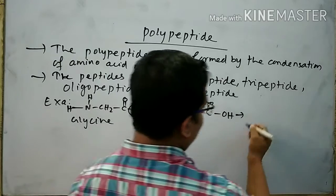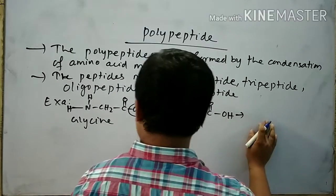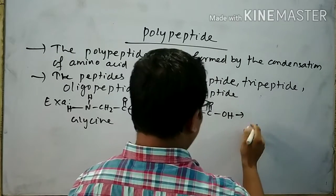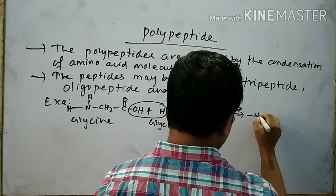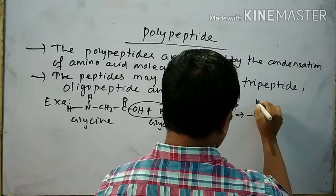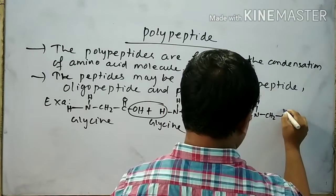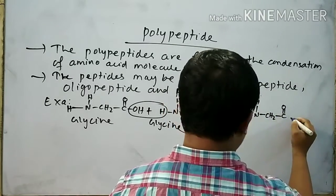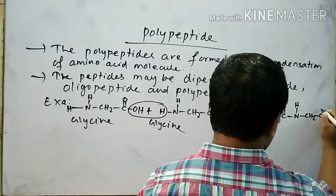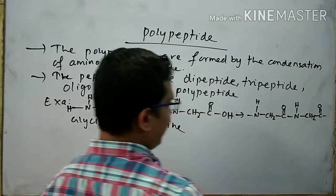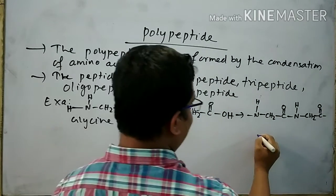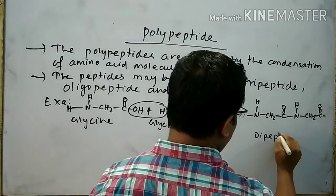Take an example of a dipeptide. Suppose I want to form a dipeptide with the help of two amino acids — one is glycine and another is also glycine. The structure of glycine is written like this.